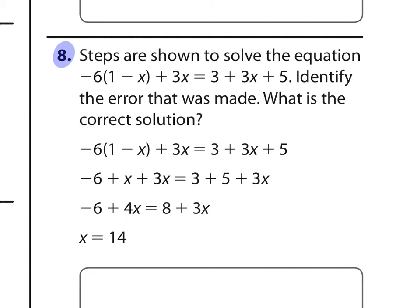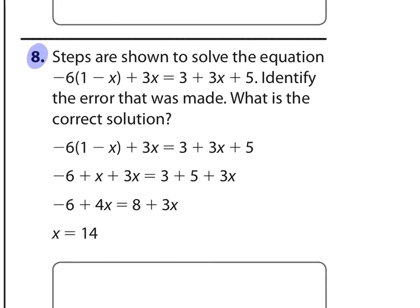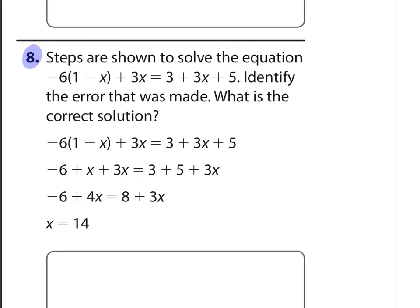When I see a problem like this, I can approach it a couple of different ways. I might go through and actually start working this out on the side to see where my steps differ from what was given in the problem. The problem with that is sometimes you might work it in a different order and still be correct. So I might just glance through to find where an error was made. Starting to simplify: negative 6 times 1 is negative 6, and negative 6 times negative X is positive 6X — so there should be a 6 there. We have already found the error.